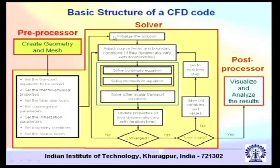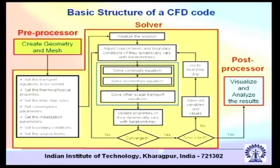Then you initialize the solution when you go through the solver. Adjust the source terms and boundary conditions if they dynamically vary with iteration. Remember that in CFD we mostly use iterative techniques, and one of the common reasons is that when we want to solve Navier-Stokes equations, which are nonlinear equations, iterative techniques are much more suited than elimination techniques. For solving a fluid flow field, we must solve at least the continuity equation and the momentum equation. Then you can solve other scalar transport equations depending on which other equations you need to solve, such as the energy equation or the species conservation equation.